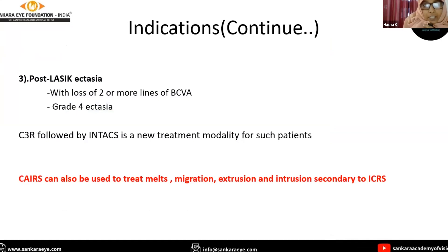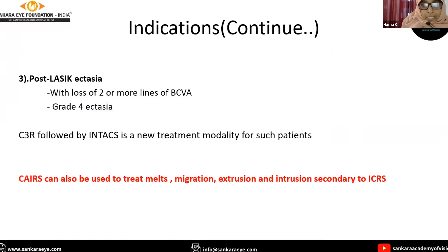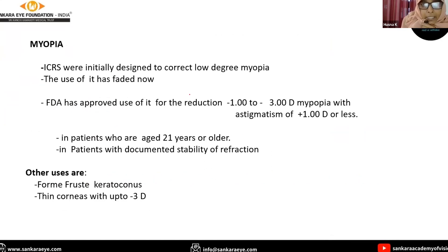Another indication: it can be used in post-refractive ectasia with loss of two or more lines of BCVA and grade 4 ectasia. Apart from this, CAIRS can also be used to treat mild to moderate keratoconus. In myopia, it was initially designed to correct myopia, but its use has faded out. However, FDA has approved its use for the reduction of minus one to minus three diopters of myopia with astigmatism up to plus one diopter.